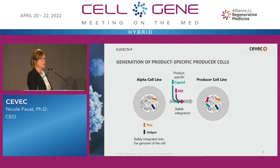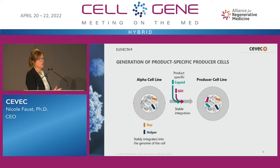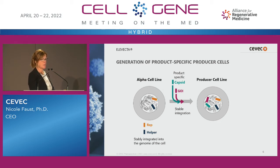You need a specific producer cell for each individual therapeutic, because the capsid will be specific — it can be one of the known common capsids or a proprietary capsid for your project. The therapeutic gene will also be individual for each product. We start from our alpha cell line that already carries the helper genes and rep genes inducibly, and we then introduce the product-specific capsid and gene of interest in a cell line development project. After stable integration, we have the final inducible producer cell line.